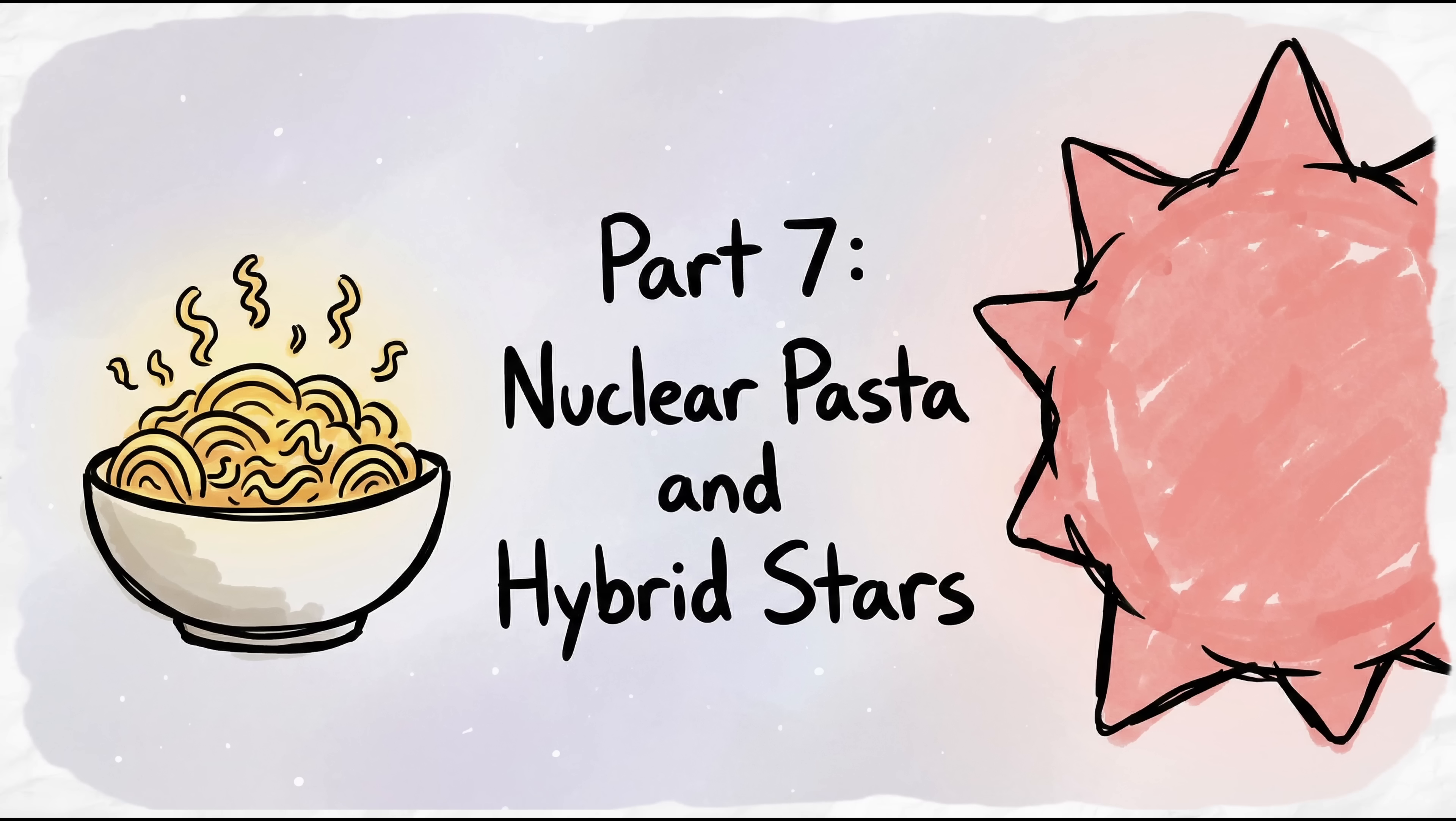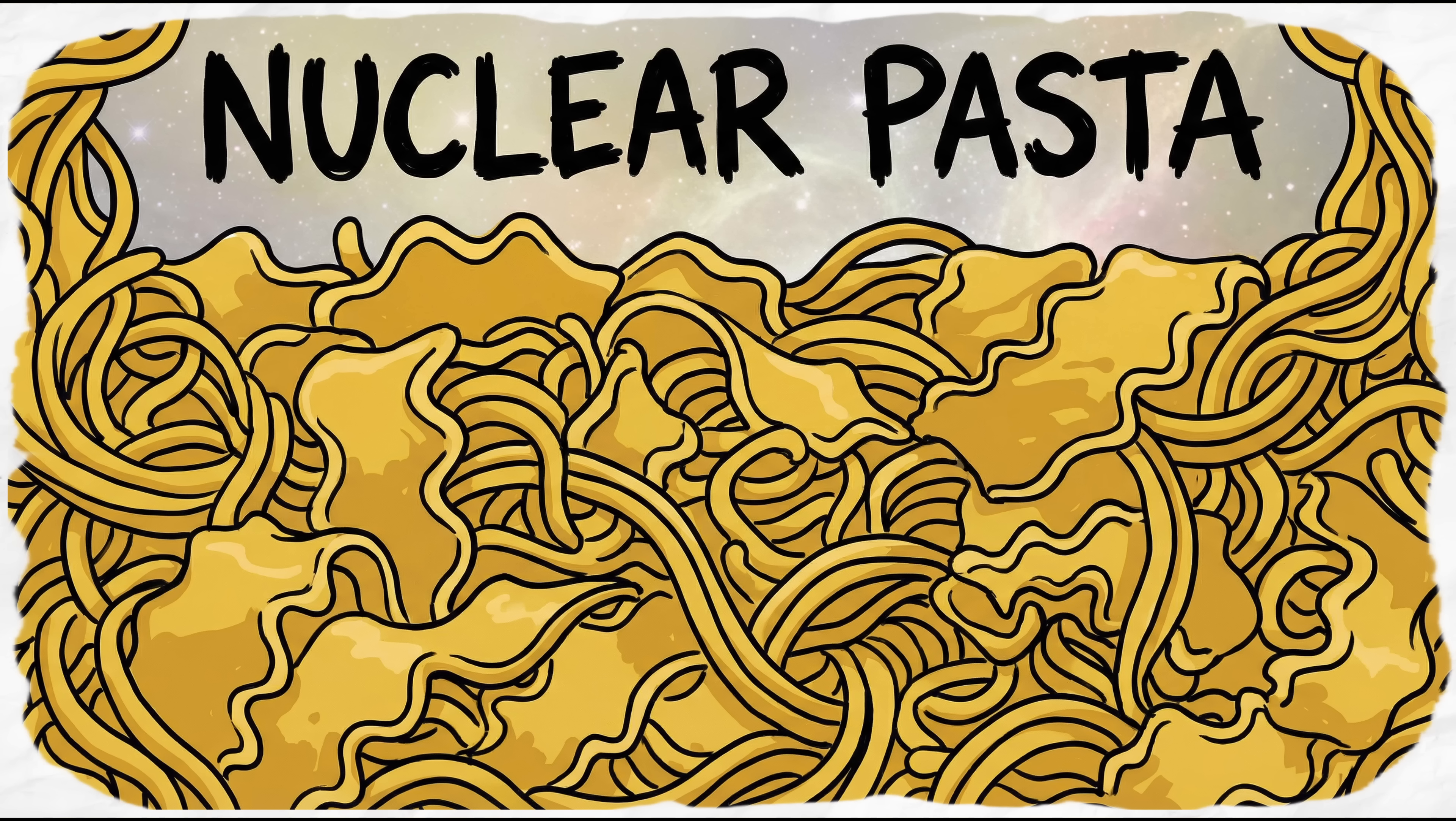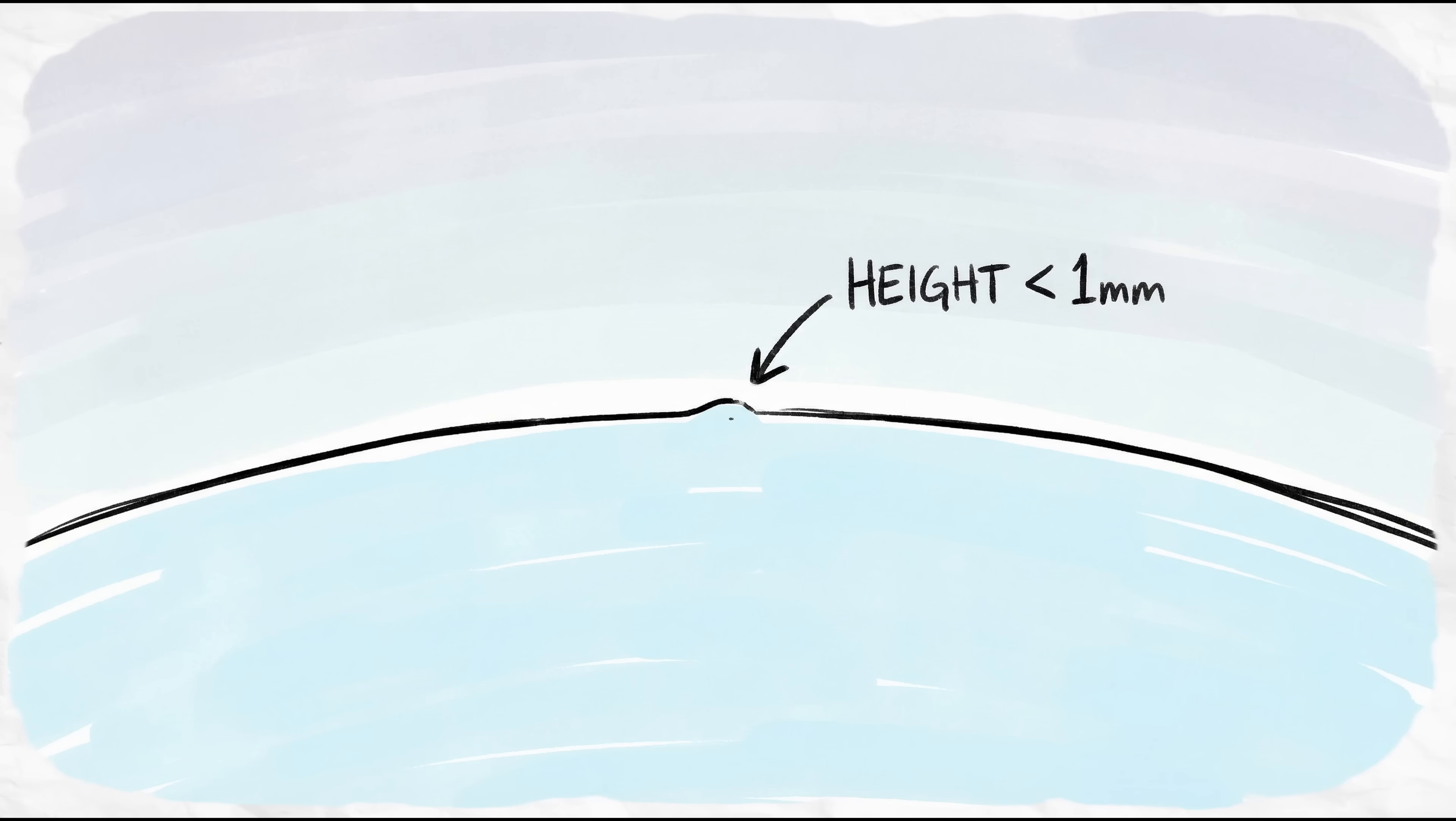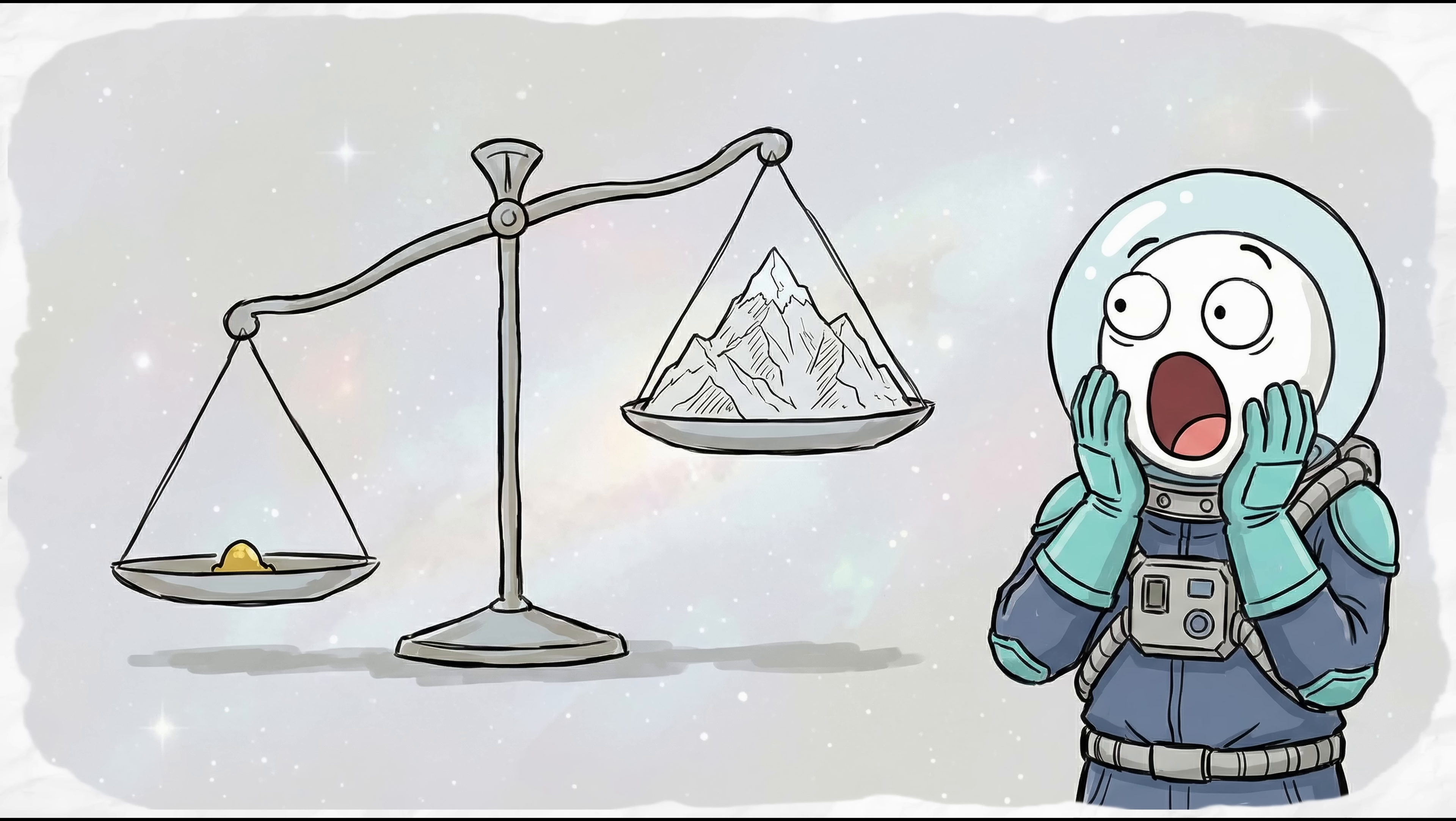Part 7. Nuclear Pasta and Hybrid Stars. Inside a neutron star, gravity crushes nuclei into nuclear pasta, which is 10 billion times stronger than steel. These sheets create mountains on the star's surface. Even though they are only millimeters high, those tiny bumps weigh more than Mount Everest.